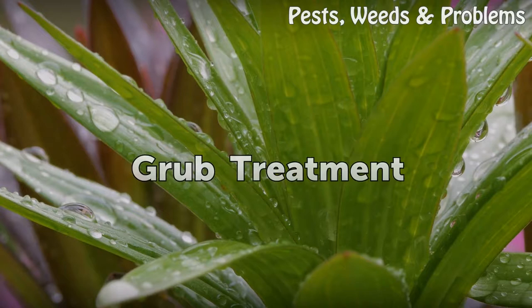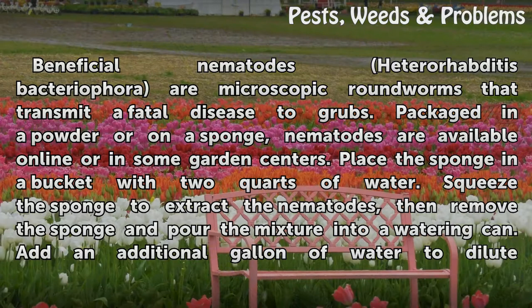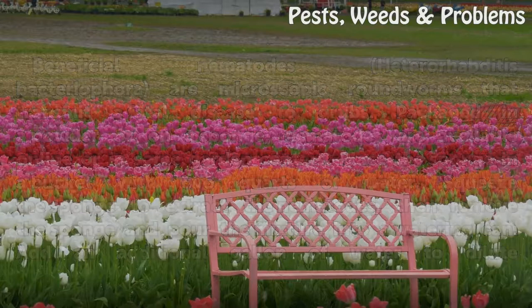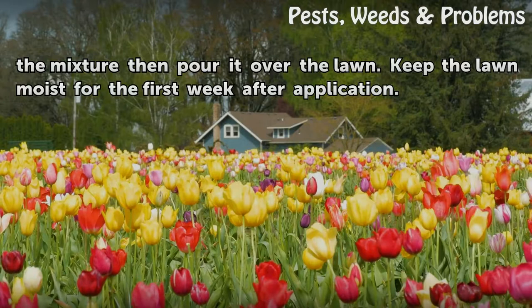Grub Treatment. Beneficial nematodes — Heterorhabditis bacteriophora — are microscopic roundworms that transmit a fatal disease to grubs. Packaged in a powder or on a sponge, nematodes are available online or in some garden centers. Place the sponge in a bucket with two quarts of water. Squeeze the sponge to extract the nematodes, then remove the sponge and pour the mixture into a watering can. Add an additional gallon of water to dilute the mixture, then pour it over the lawn. Keep the lawn moist for the first week after application.